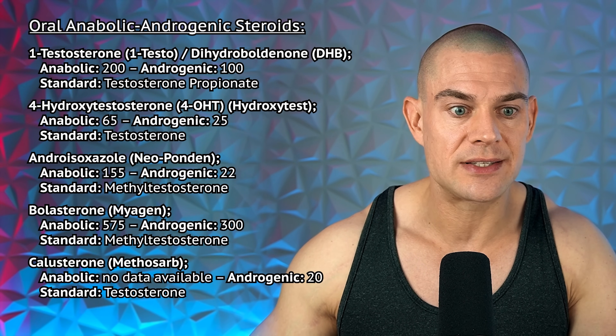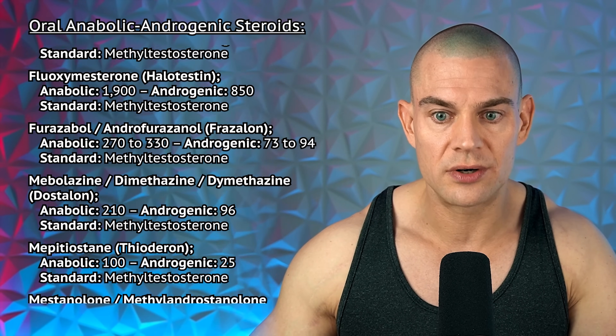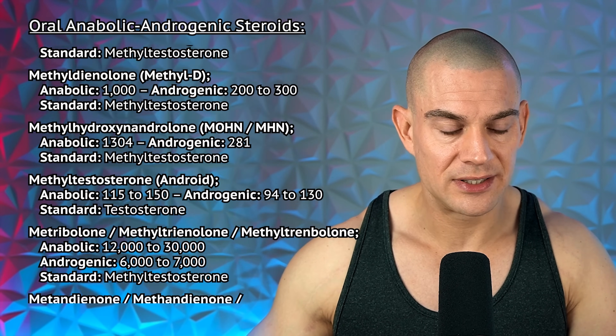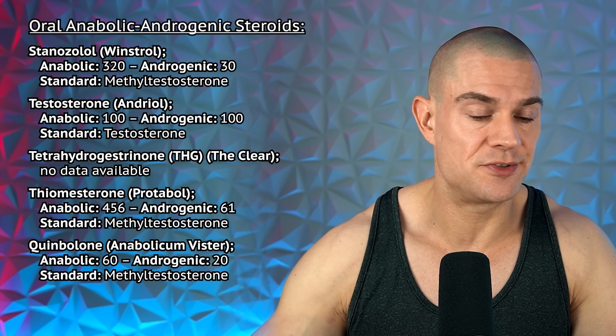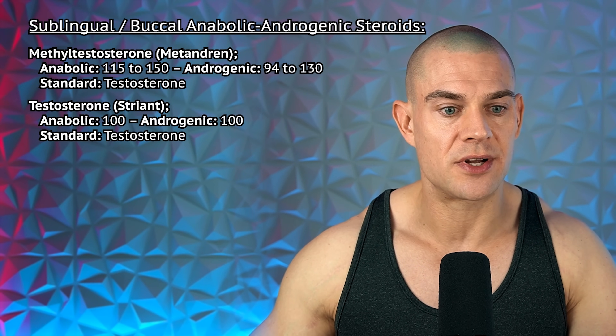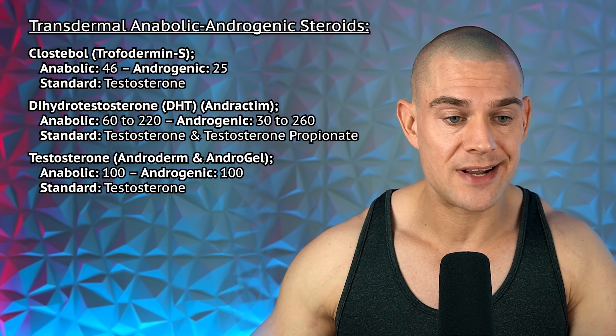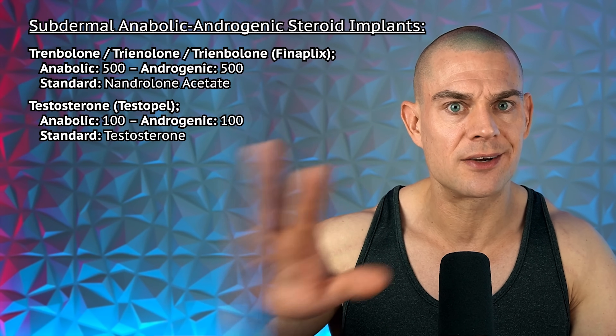When you look at the oral anabolic androgenic steroids, in many cases testosterone, testosterone propionate, or methyltestosterone are used as the reference standard. For the sublingual or buccal anabolic androgenic steroids, we have methyltestosterone and testosterone. We have transdermal anabolic androgenic steroids — clostebol, dihydrotestosterone, and testosterone. Subdermal implants include Trenbolone in the context of cattle, and testosterone Testopel implants. There are even ophthalmic anabolic androgenic steroids in the form of nandrolone eye drops, and intranasal anabolic androgenic steroids in the form of testosterone, also known as Natesto. The sole outlier is nandrolone acetate being compared to Trenbolone.